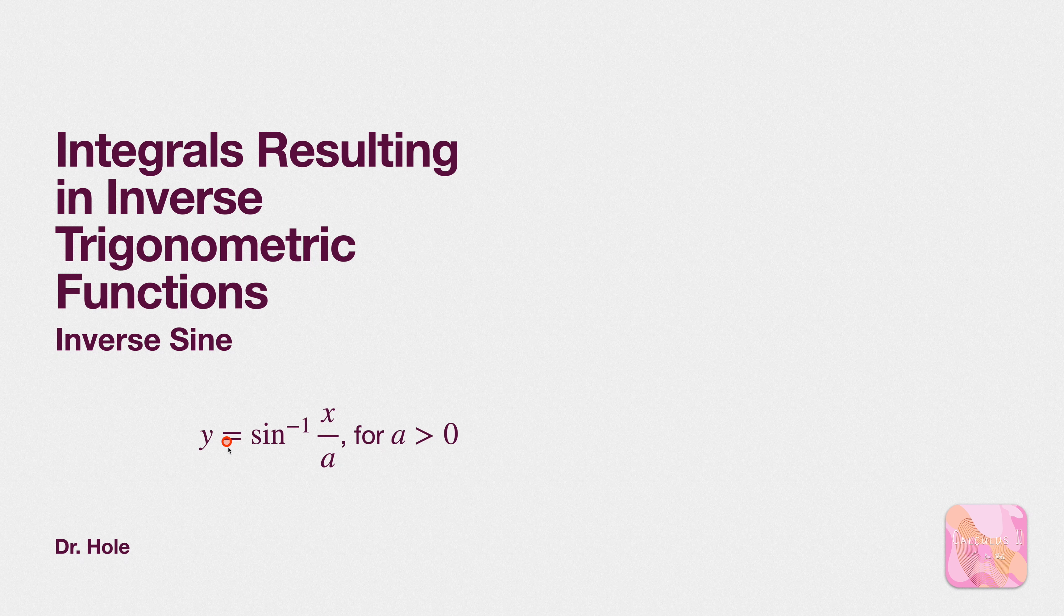Note that on the right-hand side, we're not writing down plus minus. We've made a choice. We've chosen the positive. And in an assignment, you're going to be asked why we're justified in doing that. And it has to do with the fact that y is being set equal to arc sine. Well, if you look at your notes, you know that we're interested in swapping out for a cosine of y.